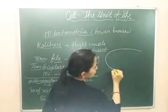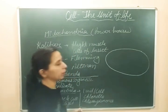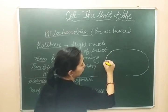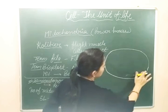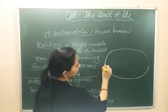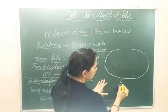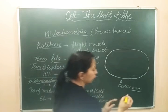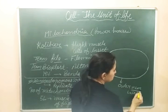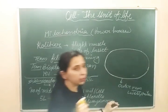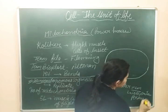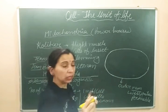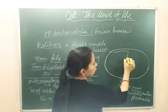Mitochondria is a double membranous structure — it has two membranes. The outer membrane has less protein, is a permeable membrane, and is a continuous membrane with no infolding. The inner membrane, present inside the outer membrane, is selectively permeable and has a high amount of proteins.